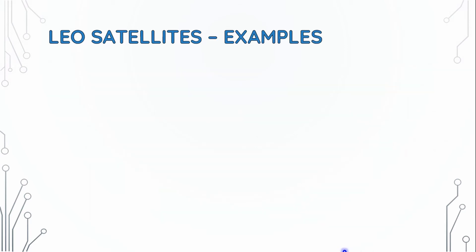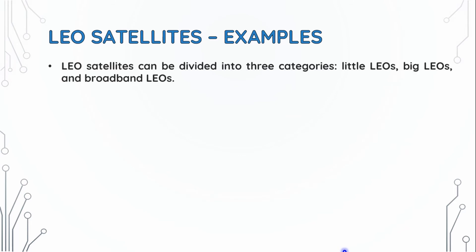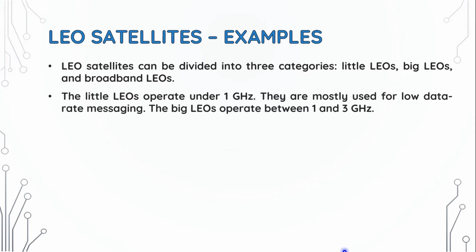LEO satellites can be divided into three categories: Little Leos, Big Leos, and Broadband Leos. Little Leos operate under 1 GHz and use low data rate messaging. Big Leos operate between 1 and 3 GHz.